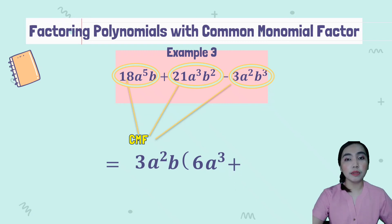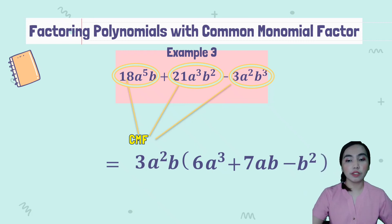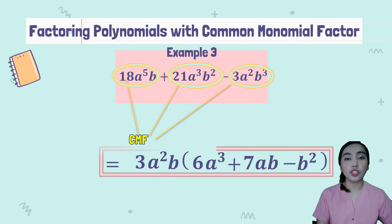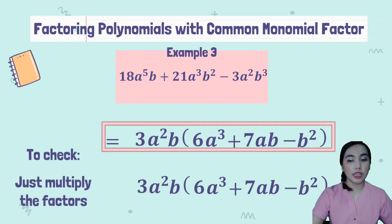Plus: 21 divided by 3 is 7. a³ divided by a² is a raised to 1. Then b² divided by b is b. So 7ab. Minus: 3 divided by 3 is 1. a² divided by a² is 1. b³ divided by b is b². So these are the factors of 18a⁵b + 21a³b² − 3a²b³, which is 3a²b(6a³ + 7ab − b²). To check, just multiply the factors — kapag yun yung lumabas after multiplying and the given is the same, meaning you have the correct answer.